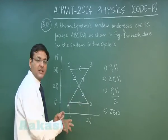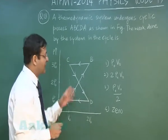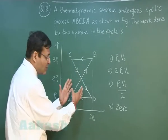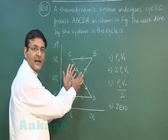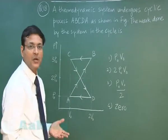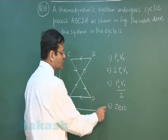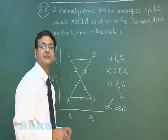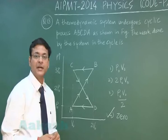By convention, the clockwise cycle work is taken as positive and the anti-clockwise as negative. Since both areas are equal, the positive area and negative area cancel out, giving a net area of zero. Therefore, the work done by the system is zero, and the most appropriate answer is the fourth option. That explains question number 18.